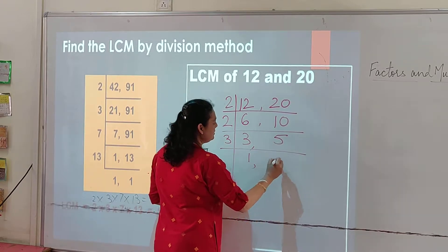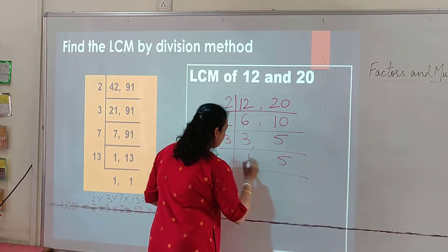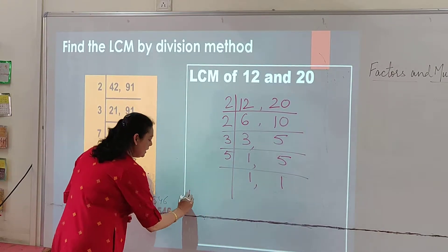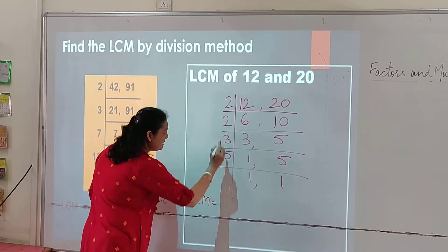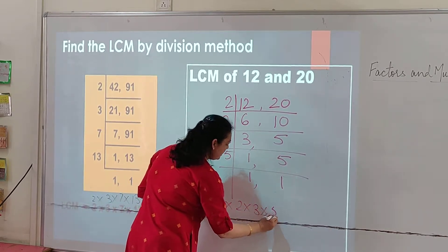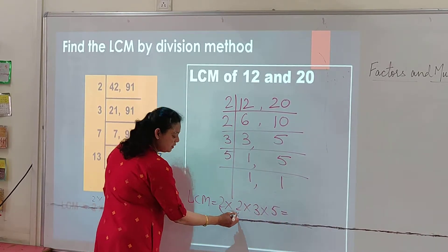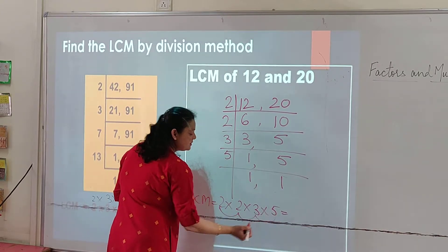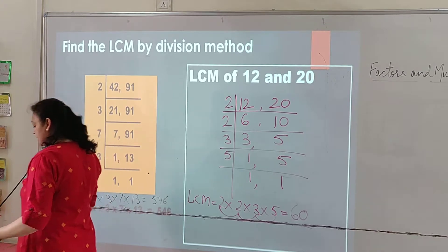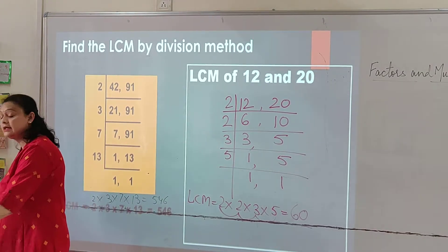3 times 1 is 3, 5 as it is. Next, 5 times 1 is 5. Now for LCM we will multiply all the multiples: 2 into 2 into 3 into 5. Let's multiply: 2 times 2 is 4, 4 times 3 is 12, and 12 times 5 is 60. So what is the LCM of 12 and 20? It is 60.